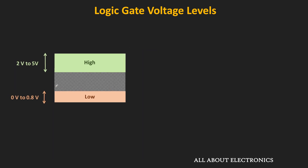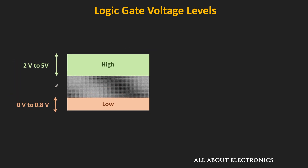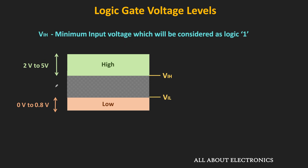In this voltage range, there are four different important voltage levels. First, let us see the two important voltage levels for the input side: VIH and VIL. VIH stands for the minimum input voltage which will be considered as logic 1. So if the input to the logic gate is below this voltage level, then the logic gate will not consider that input as logic 1. For example, if the input voltage is less than 2V, then the logic gate will not consider it as logic 1.